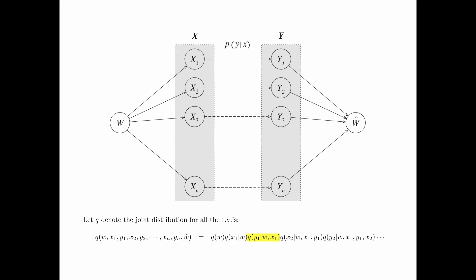For the conditional distribution q(Y1|W,X1), by the definition of the DMC, when X1 is given, Y1 is independent of W. For the conditional distribution q(X2|W,X1,Y1), because X2 is a function of W, once W is given, X2 is independent of X1 and Y1. For the conditional distribution q(Y2|W,X1,Y1,X2), according to the definition of the DMC, once X2 is given, Y2 is independent of W, X1, and Y1.